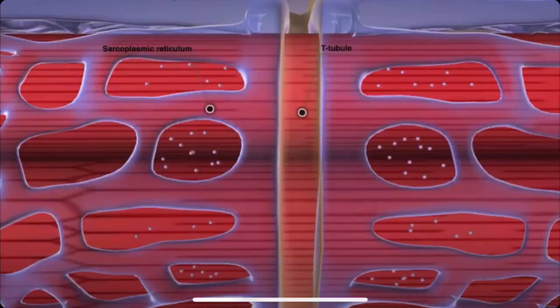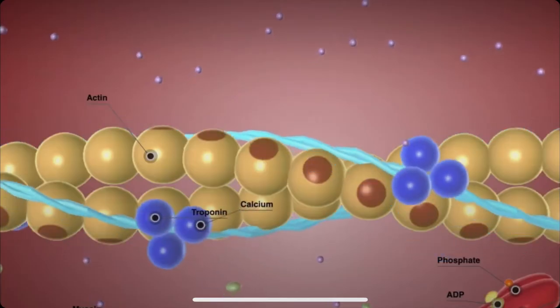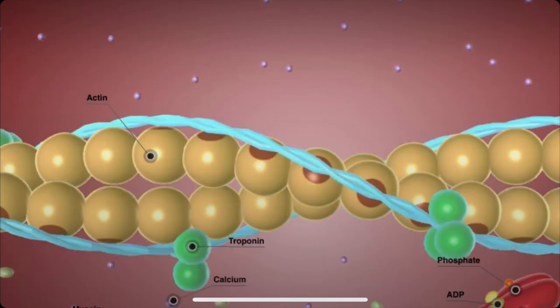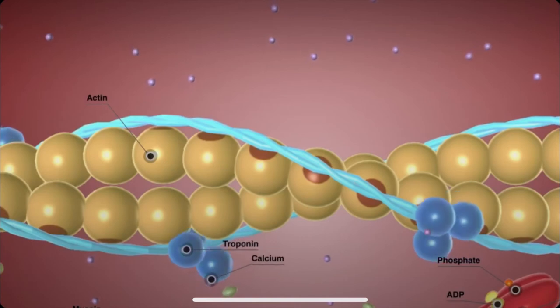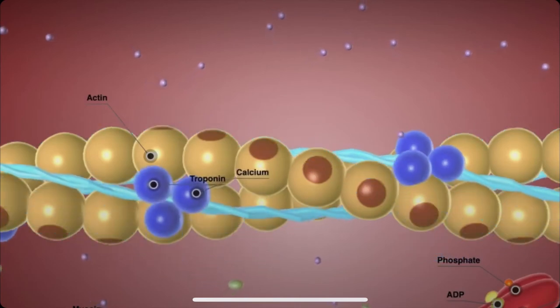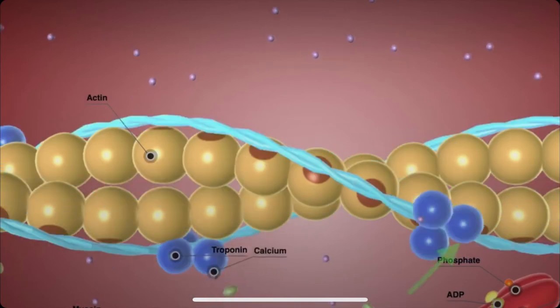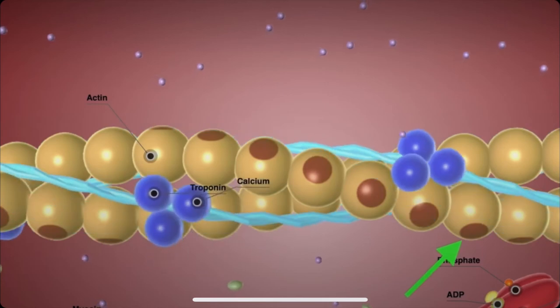After the calcium leaves the sarcoplasmic reticulum, it binds to a regulatory protein called troponin on the actin filament. This signals another regulatory protein called tropomyosin to move out of the myosin binding site on the actin.